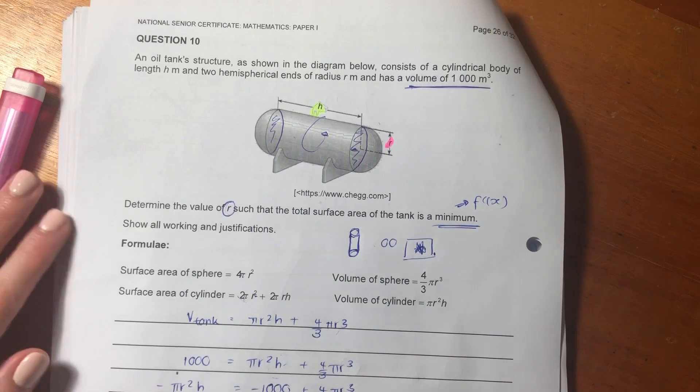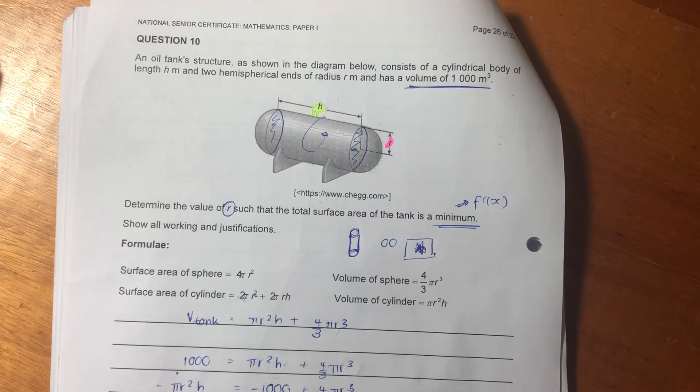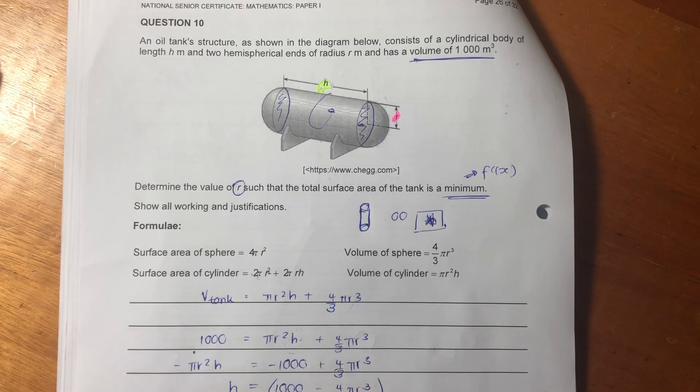Now, when you see the word minimum or maximum, you should be saying, I should be getting the derivative at some stage, because that will help me get inside there. So, let's start with what we have.